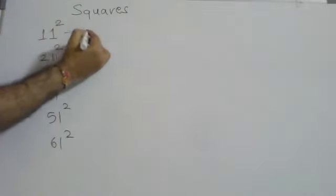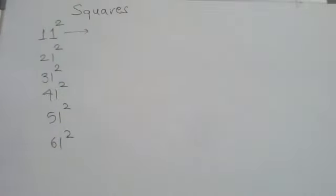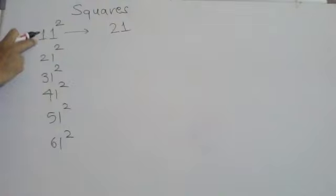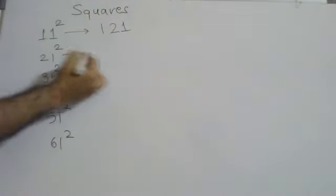First we'll talk about 11 square. Write one at the end, then double of the first digit that is one, then write down the square of one, that is one. So 11 square equals 121.